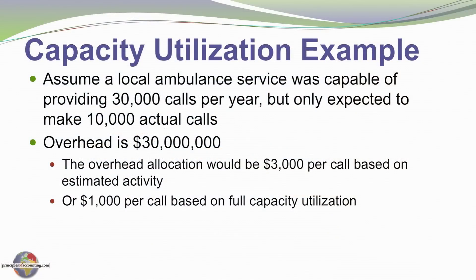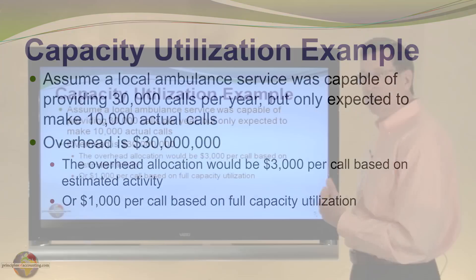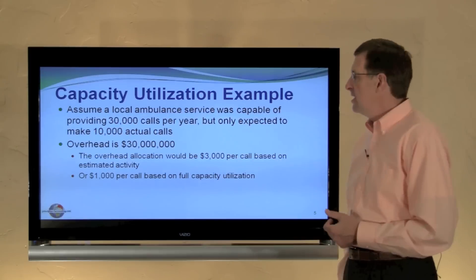Let's assume the cost of this operation is $30 million. The overhead allocation would be $3,000 per call based on the estimated activity of 10,000 calls — that's pretty high. On the other hand, if we base our overhead allocation on full capacity of 30,000 calls, the charge is only $1,000 per call — perhaps a more measured allocation of the cost.